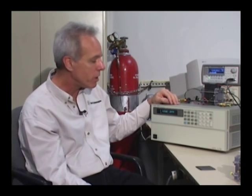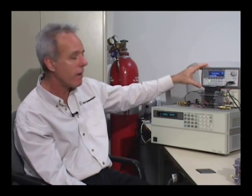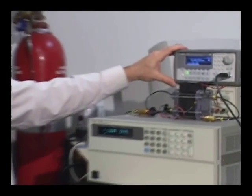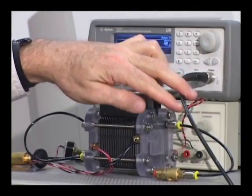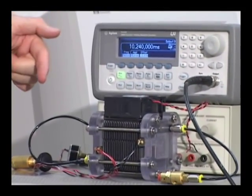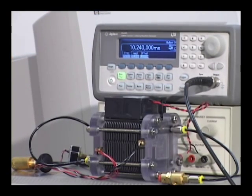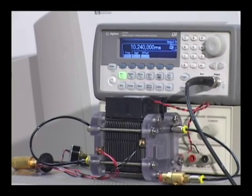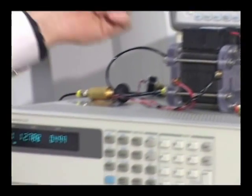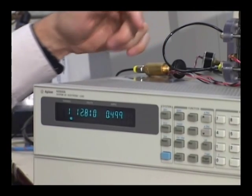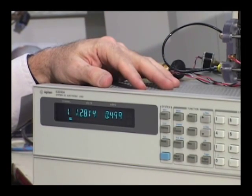The other really interesting thing that we can do with this electronic load is I can use a function generator, which I have set on top here. And the output of function generator is actually run around to the back of the load. And I've got this set for a sine wave, and I can make small perturbations on the DC current that's flowing by programming an external current on the back of the electronic load.